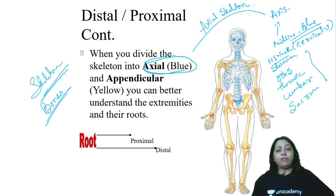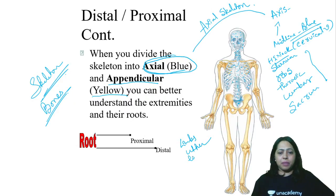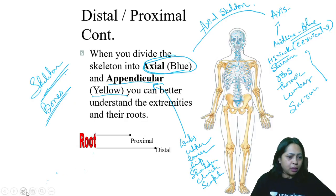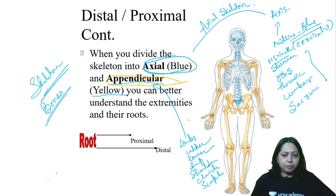Similarly, we have the yellow ones — these are called appendicular skeleton. This includes the limbs: upper limbs, lower limbs, the hip bones, the shoulder, the clavicle, and the scapula. All of these come under the appendicular skeleton.